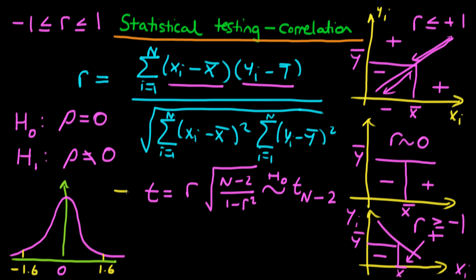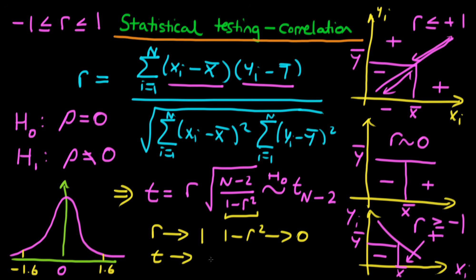How does this statistic allow us to test whether there is likely a correlation in the population? If we think about the circumstance where r tends to 1, then the denominator 1 minus r squared is going to tend to 0. Because 1 minus r squared tends to 0, we have some number divided by something very, very small, so the t-statistic tends to plus infinity. That means we get a t-value to the right of the critical values, making it very unlikely that this result would have occurred by chance — in other words, very unlikely if there were truly no correlation between x and y in the population.